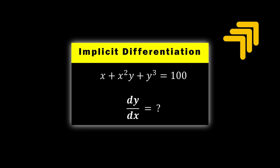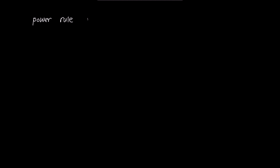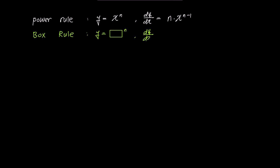To begin with a simple explanation of implicit differentiation, let's first look at the well-known power rule. If we have y equals x to the power of n, then dy over dx is n times x to the power of n minus 1. I will introduce a method I personally like to call the box rule. When y is represented as box to the power of n, if we differentiate this box with respect to x, it becomes n times box to the power of n minus 1 times box prime.